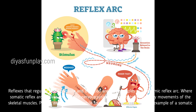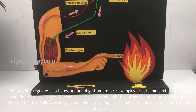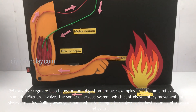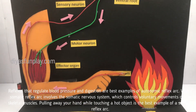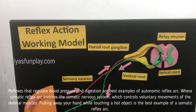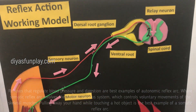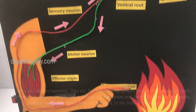The somatic reflex arc involves the somatic nervous system which controls voluntary movements of skeletal muscles. Pulling away your hand when touching a hot object is the best example of a somatic reflex arc.